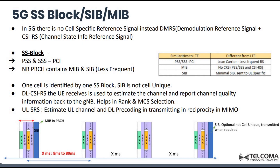The SS block — synchronization signal block — contains PSS and SSS for PCI calculation to represent a particular cell. Our PBCH contains MIB and SIB. SIB is less frequent; it doesn't come every time with the SSB but comes after particular time intervals according to the requirement. One cell is identified by one SS block, and SIB is not cell-unique — it could be the same for two cells.